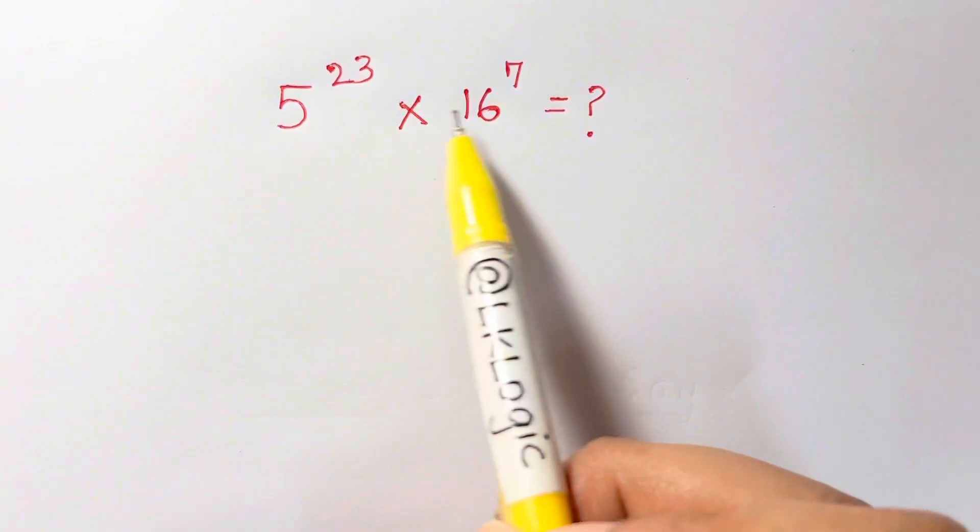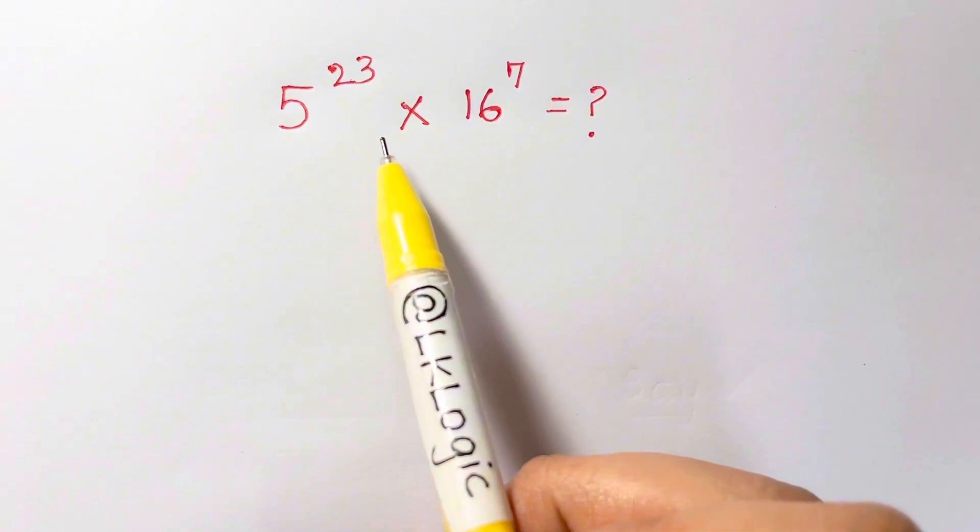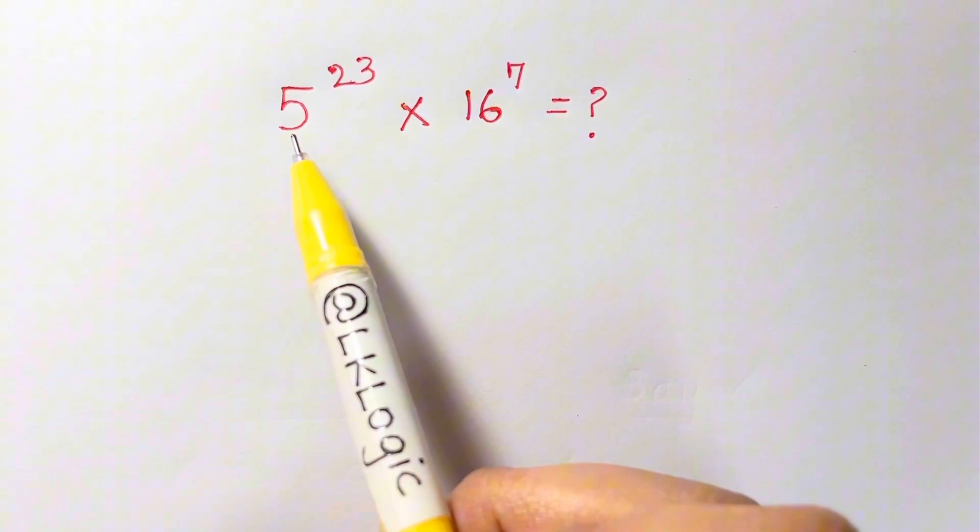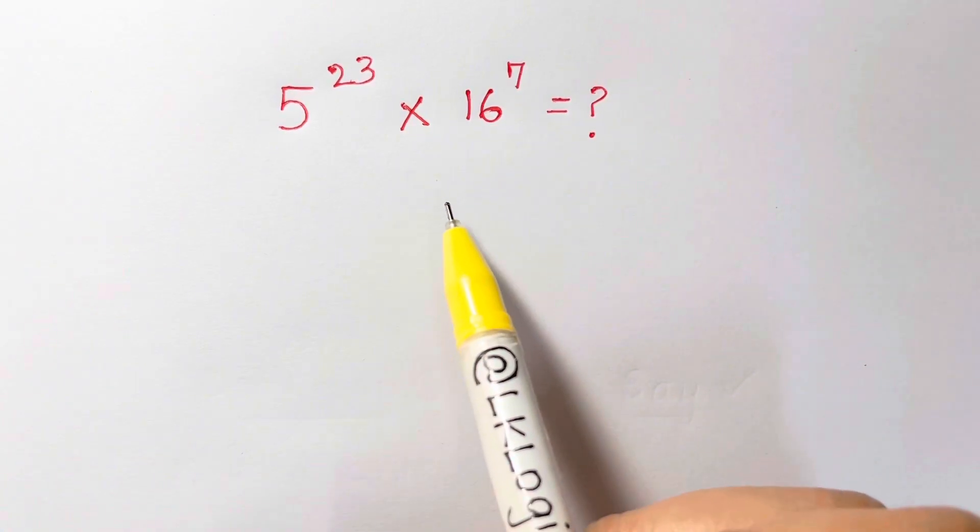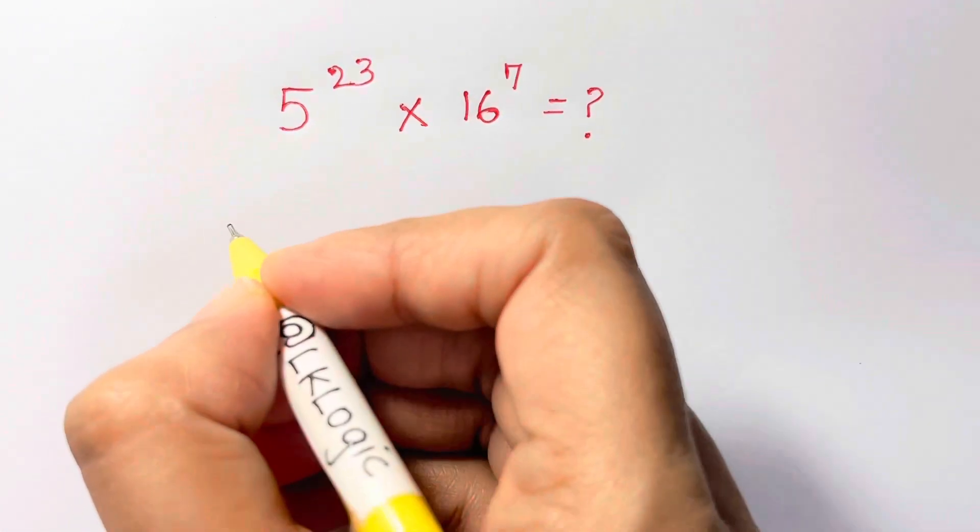Hi guys, here I have a nice exponential problem for you all to solve without calculators. Here it is: 5 to the 23 times 16 to the 7 equals what?